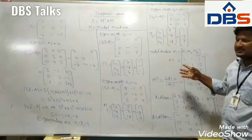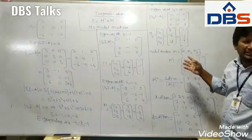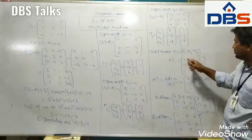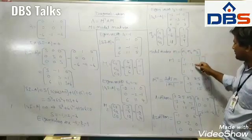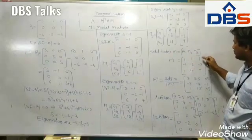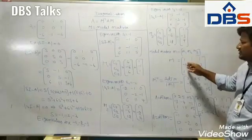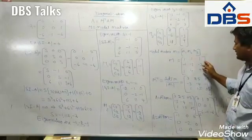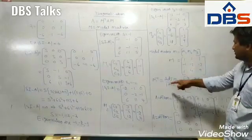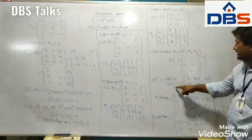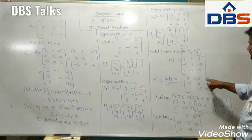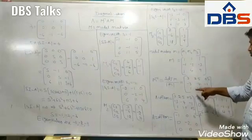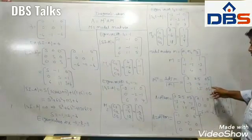The modal matrix M is the combination of the three eigenvectors M1, M2, M3, forming the matrix [1 1 1; -1 -2 -3; 1 4 9]. To find its inverse, using cofactor calculation, M inverse equals [3 2.5 0.5; -3 -4 -1; 1 1.5 0.5].